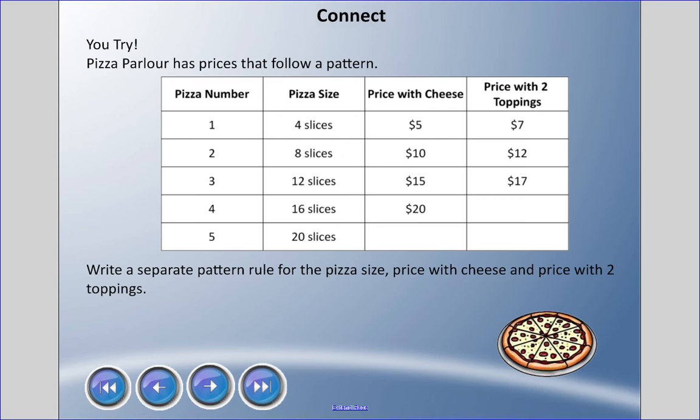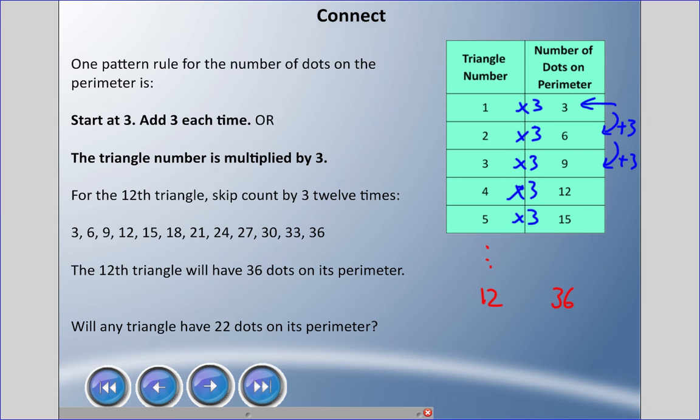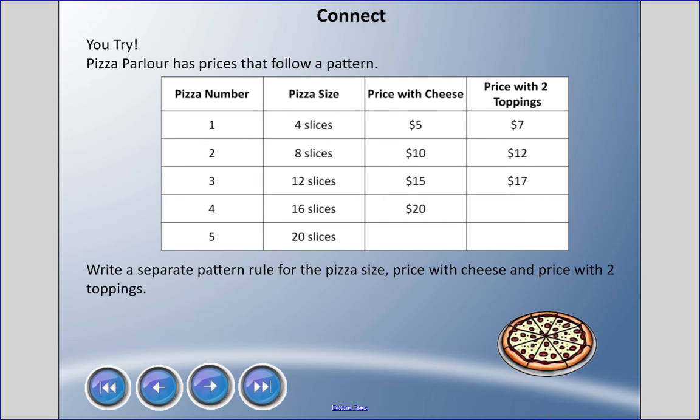I've got you to try this one. We have this place called pizza parlor, and they have prices that follow a pattern. I'd like you to write a separate pattern rule for the pizza size, the price with cheese, and the price with two toppings. Pattern rules - the ones I like, we say where we start and what we're doing each time.